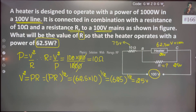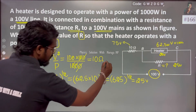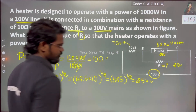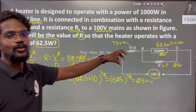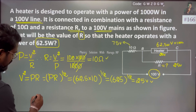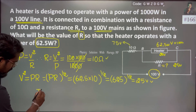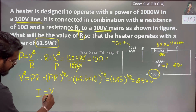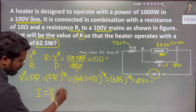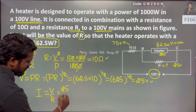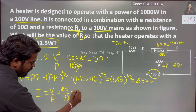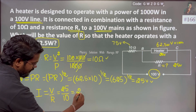For the series resistance and voltage drop, the current is very easy to find. I equals V by R. V is 25 V, resistance is 10 Ohm, which gives 2.5 Ampere.